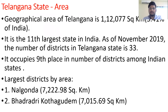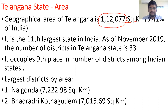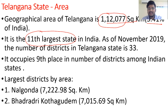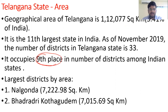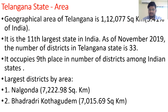The area of Telangana is 1,12,077 square kilometers, which is 3.41% of India's total area. Telangana is the 11th largest state in India by area, as of November 2019. The number of districts is 33, with Mulugu and Narayanpet added on February 17, 2019. In terms of number of districts, Telangana occupies 9th place among Indian states. Area-wise it is 11th — this ranking is important for prelims.